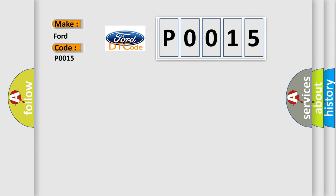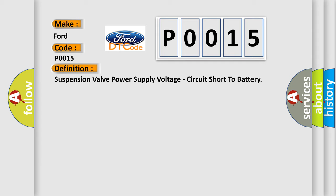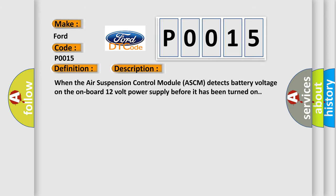The basic definition is suspension valve power supply voltage circuit short to battery. And now this is a short description of this DTC code: When the air suspension control module ASCM detects battery voltage on the onboard 12V power supply before it has been turned on.